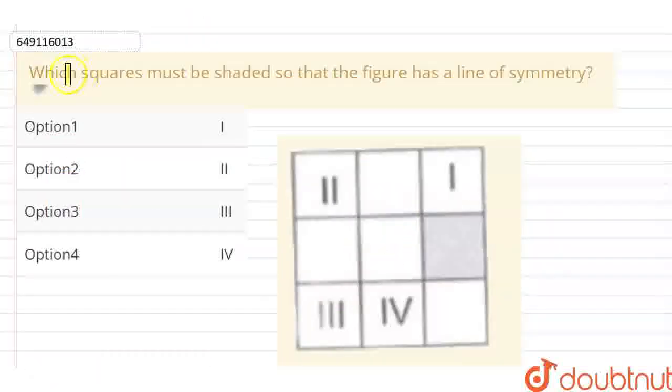Hello students, we have a question: which squares must be shaded so that the figure has a line of symmetry?